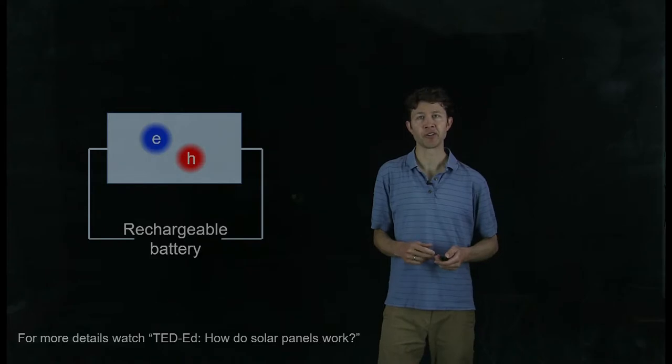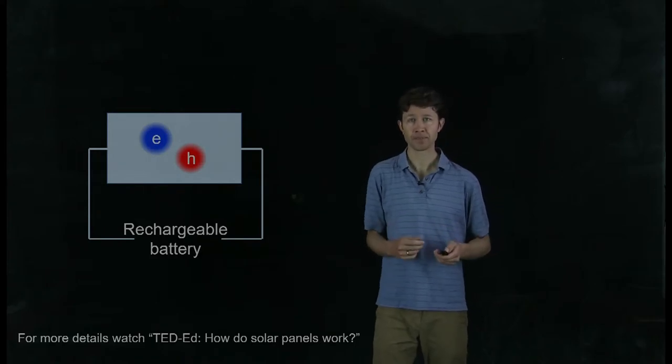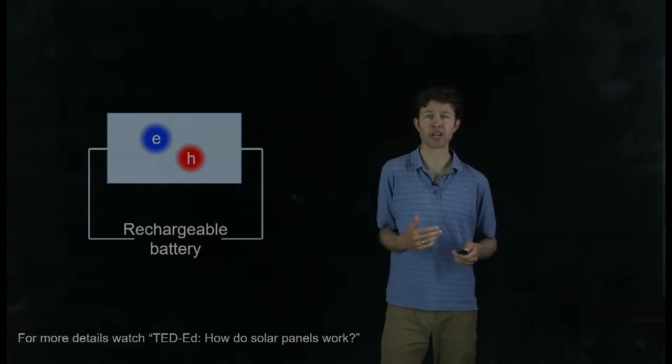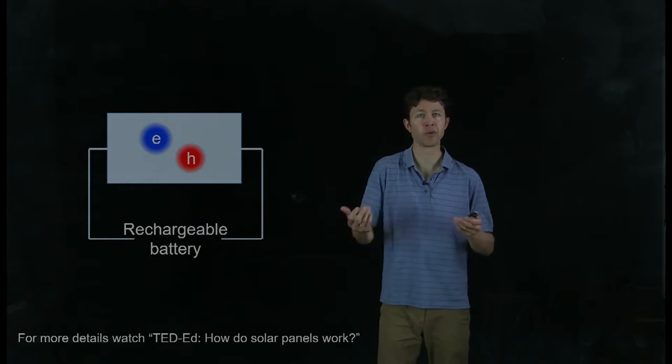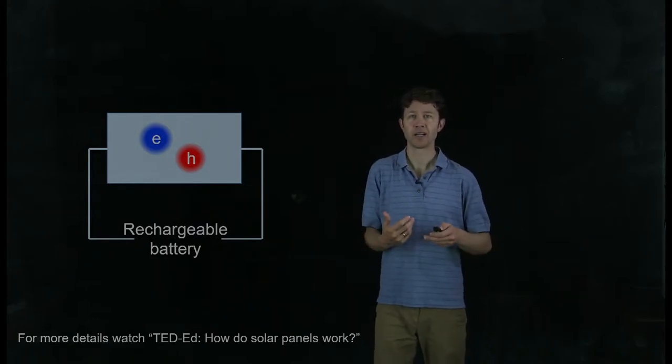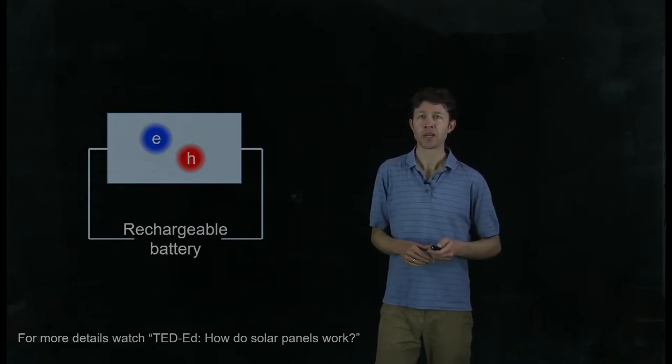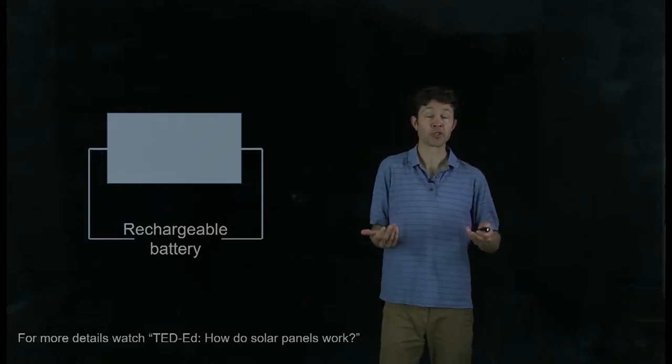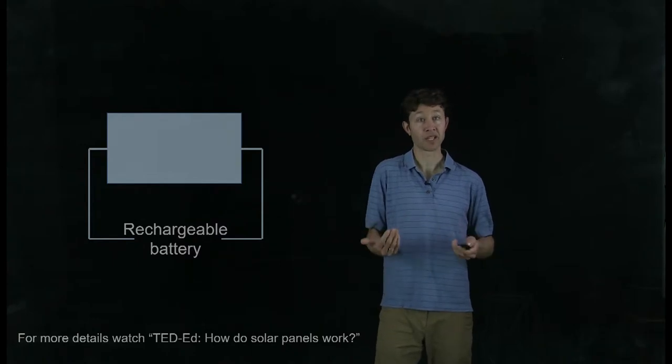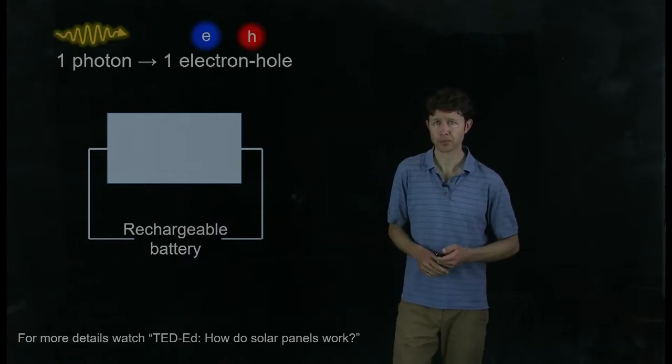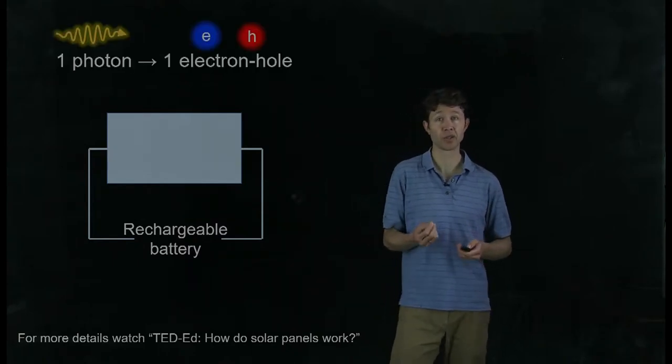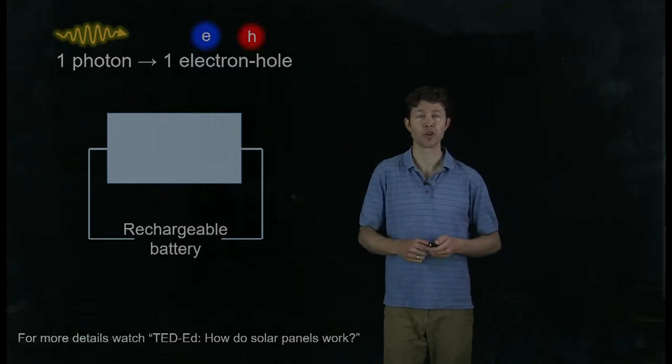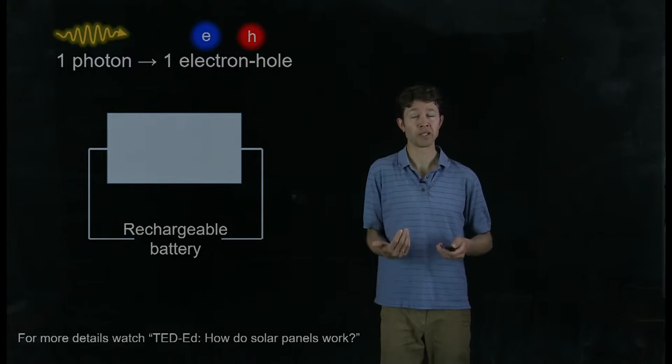A photon gets absorbed by that material, and an electron and hole pair are created. That means an electron's excited in the material, it becomes free to move through the material, and it leaves behind an empty spot called a hole. This electron and hole are used to charge a battery or do some other useful work, and that's the basics of how a solar cell works. The key here is that one photon was turned into one electron-hole pair, and that's the key assumption that Shockley and Queisser put into their calculation.